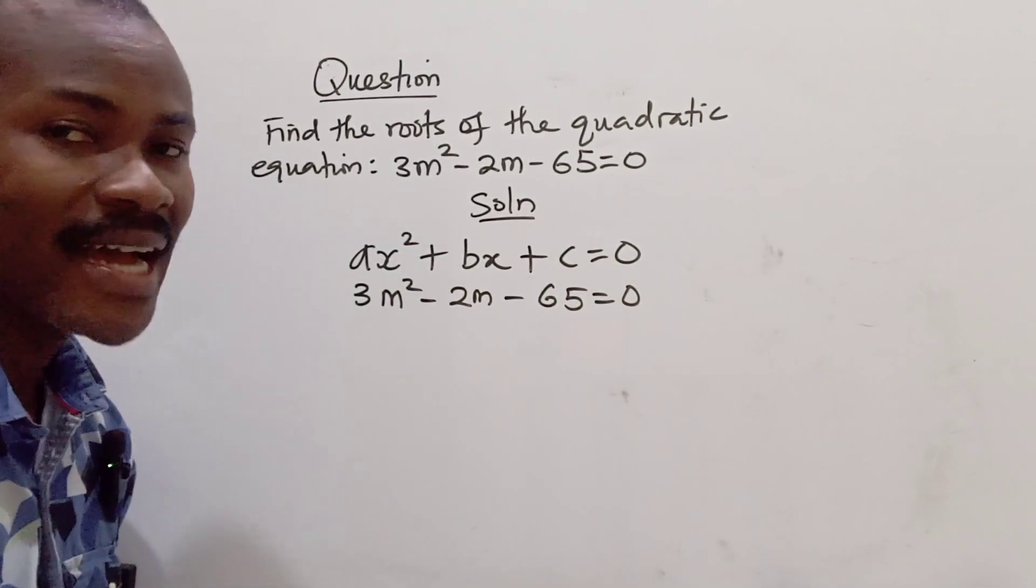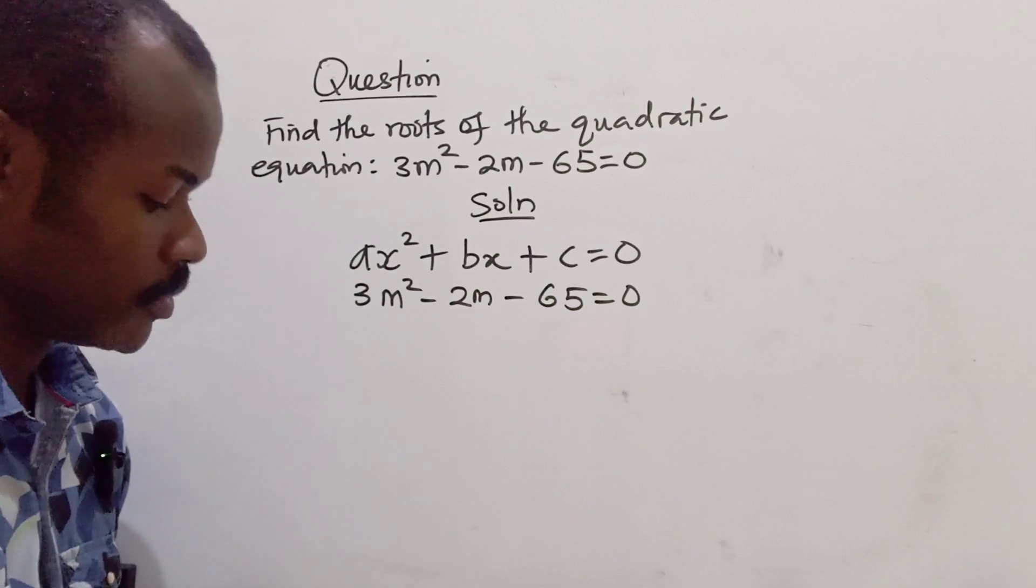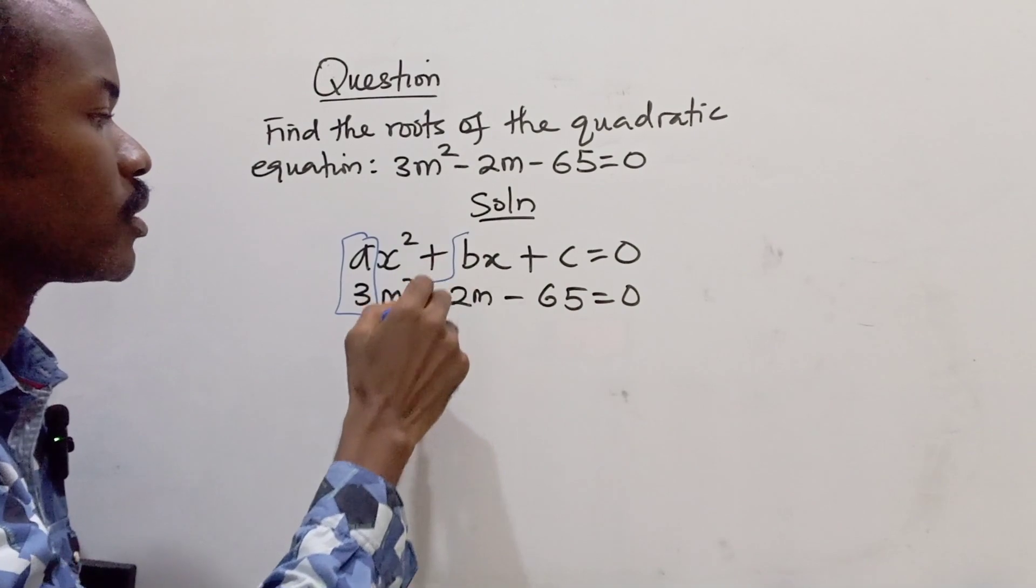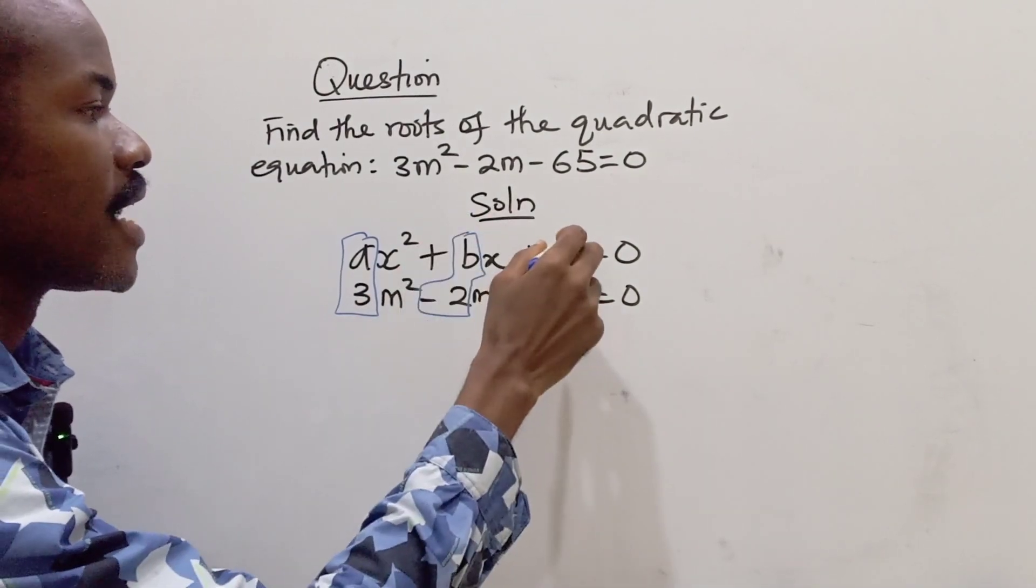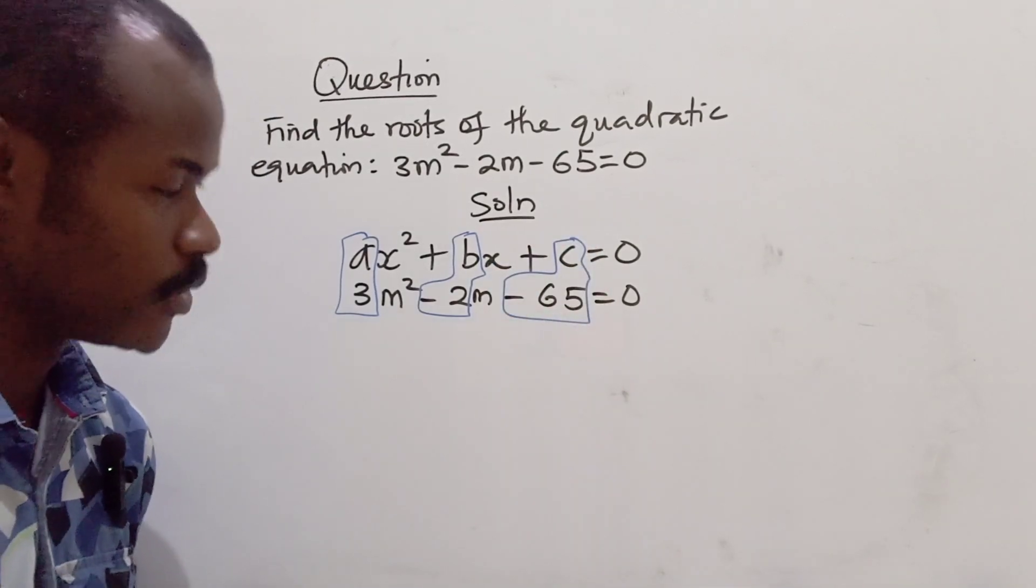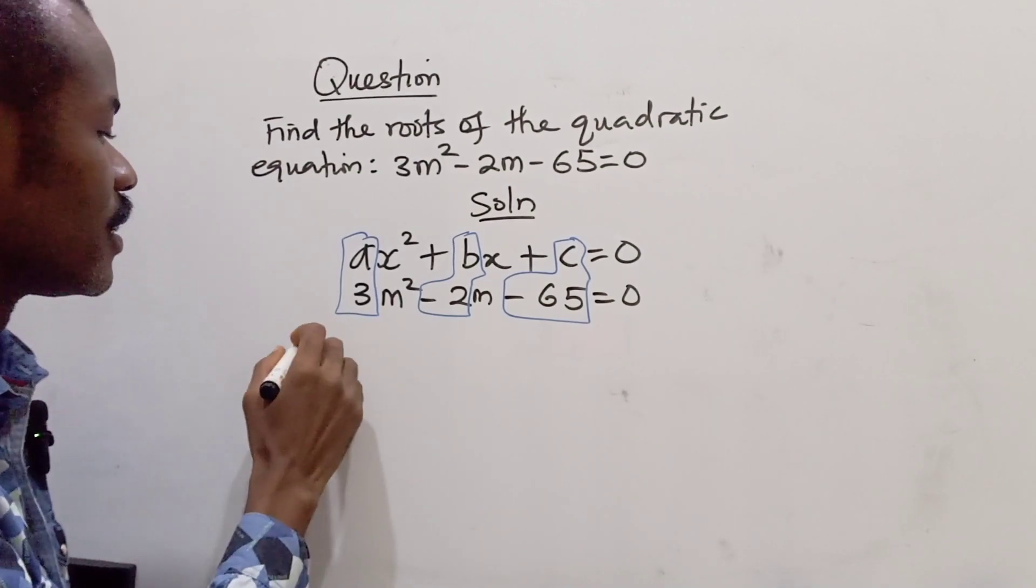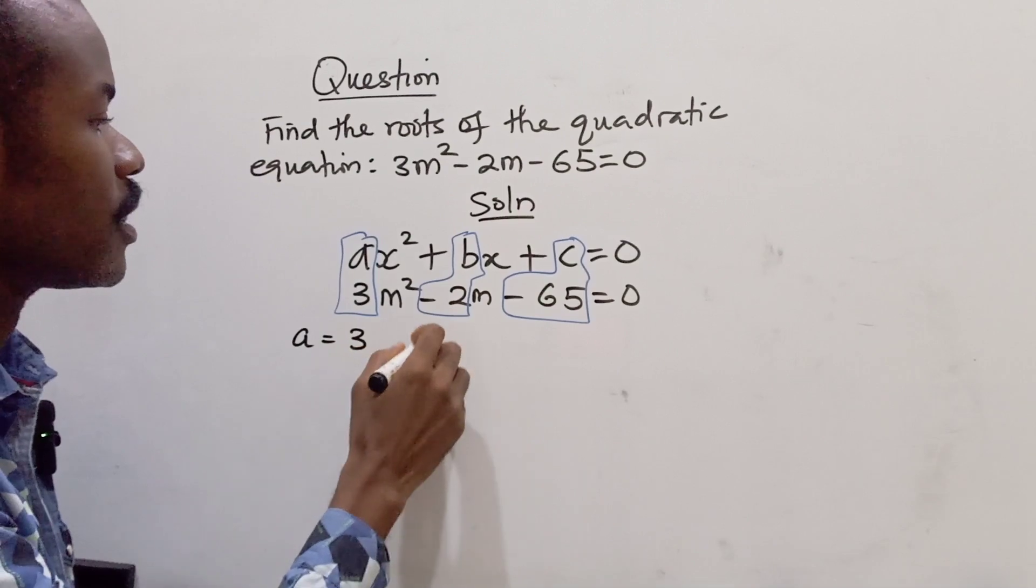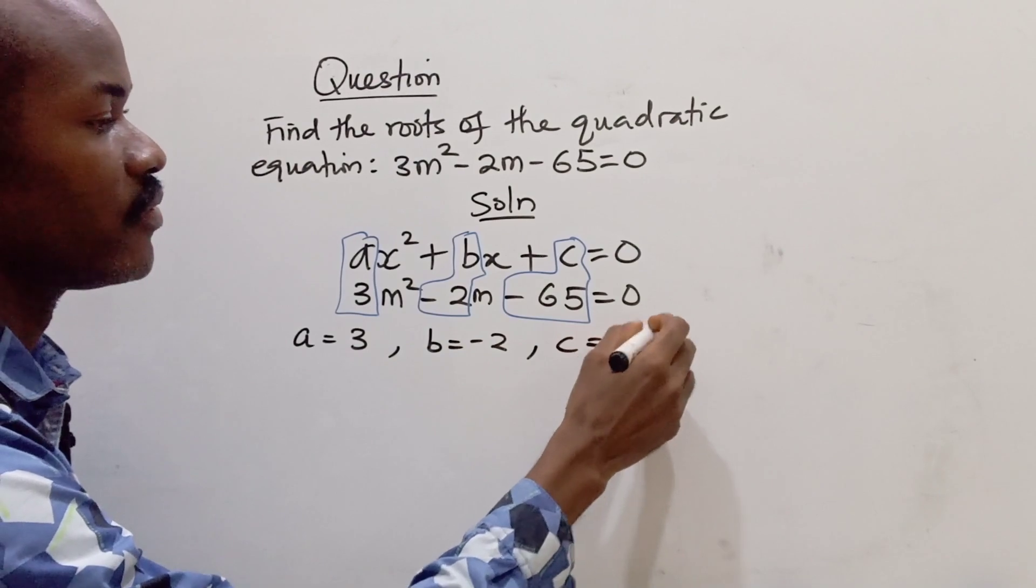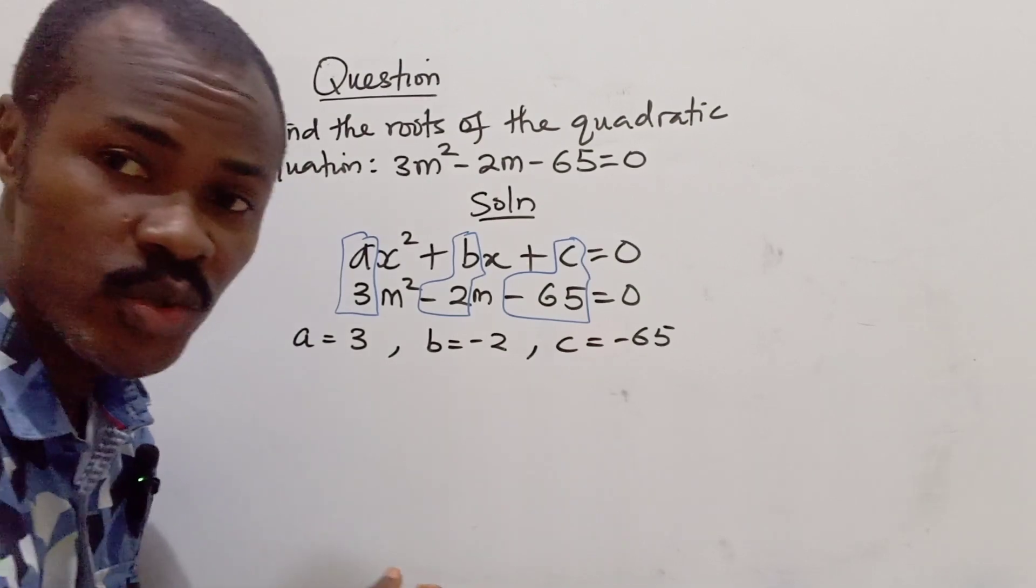Our given equation is 3m² - 2m - 65 = 0. From this we have to identify the values of a, b, and c. Our a is 3, our b is -2, and our c is -65. I'm going to quickly write that down.